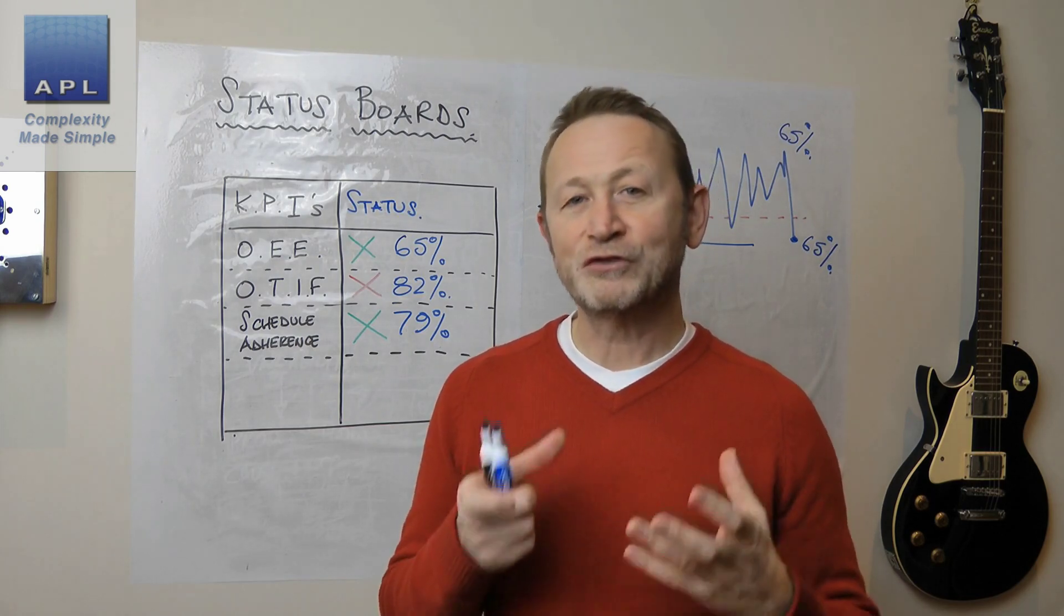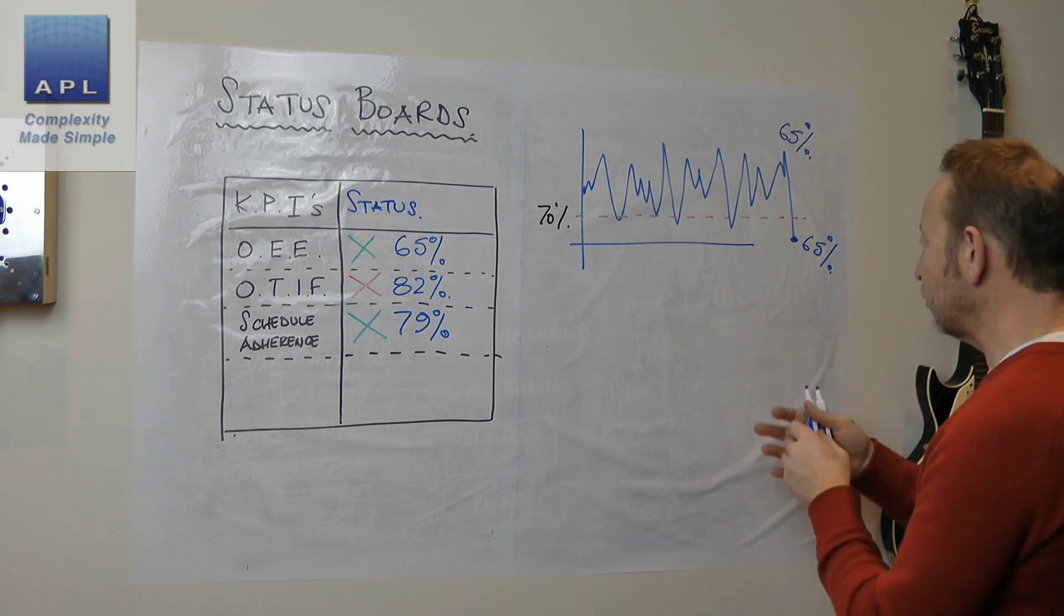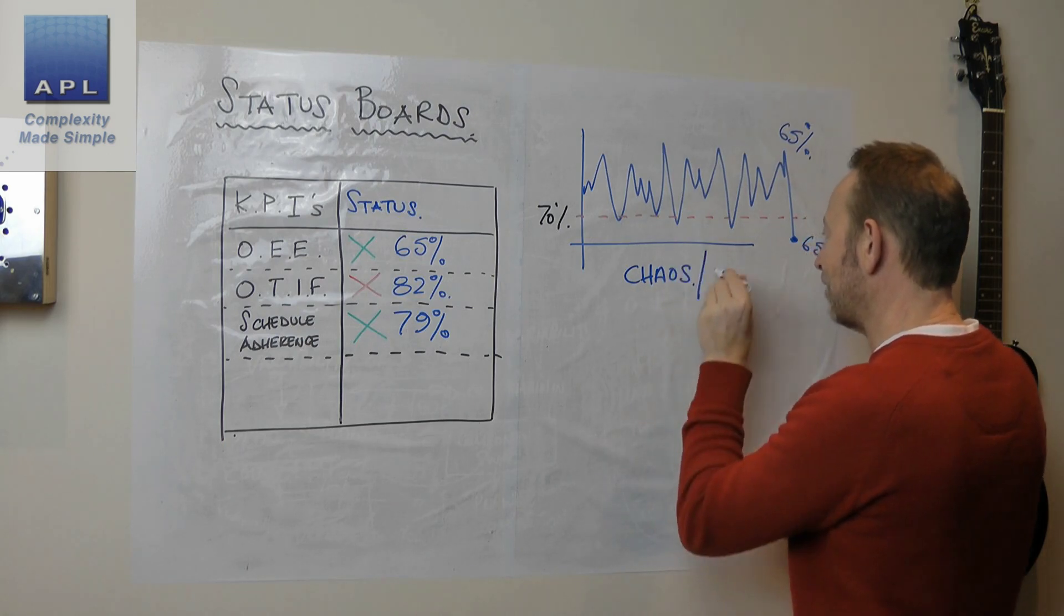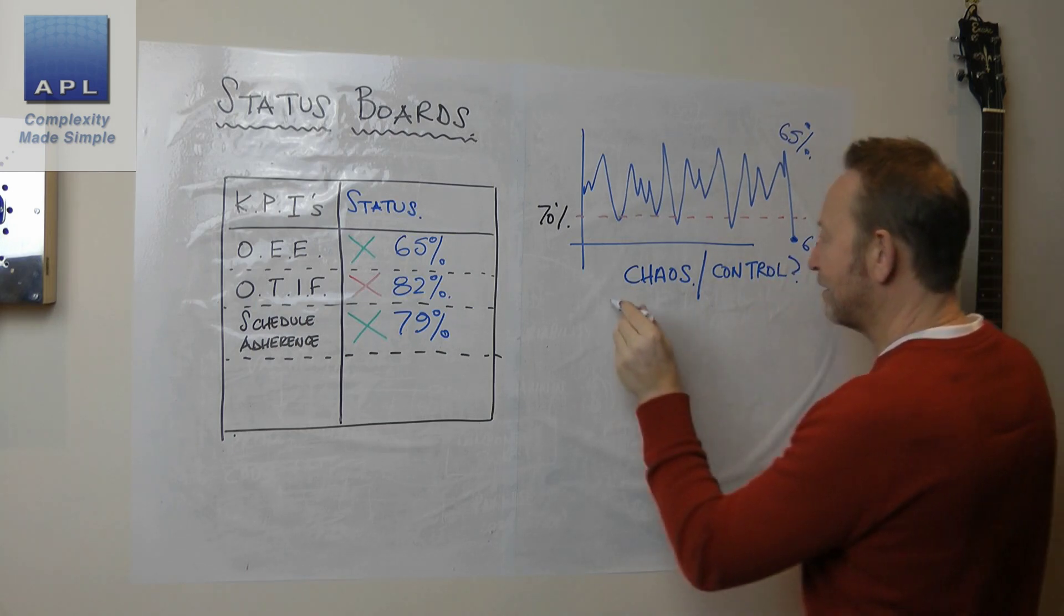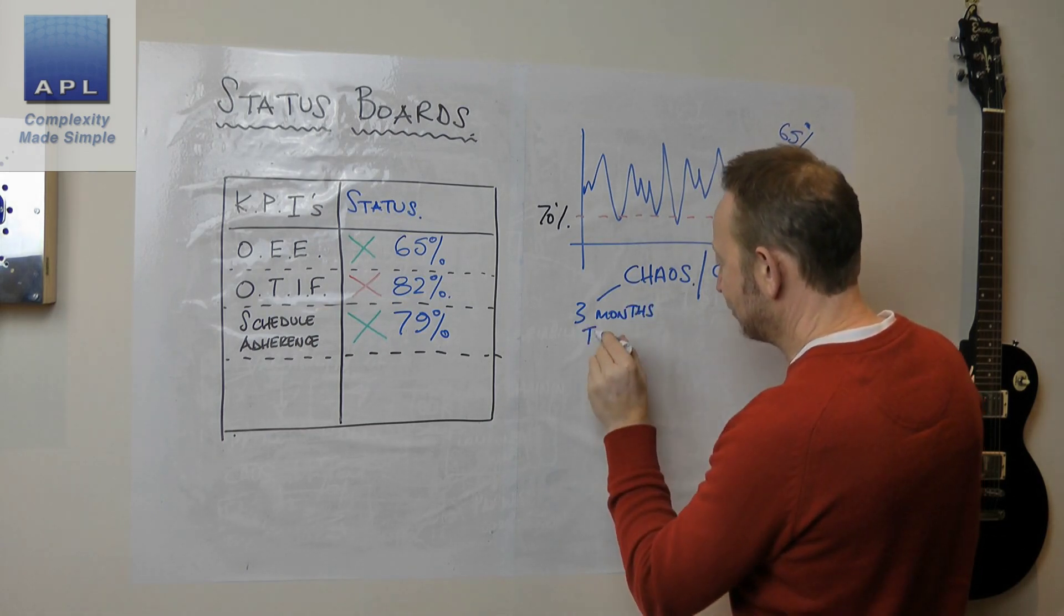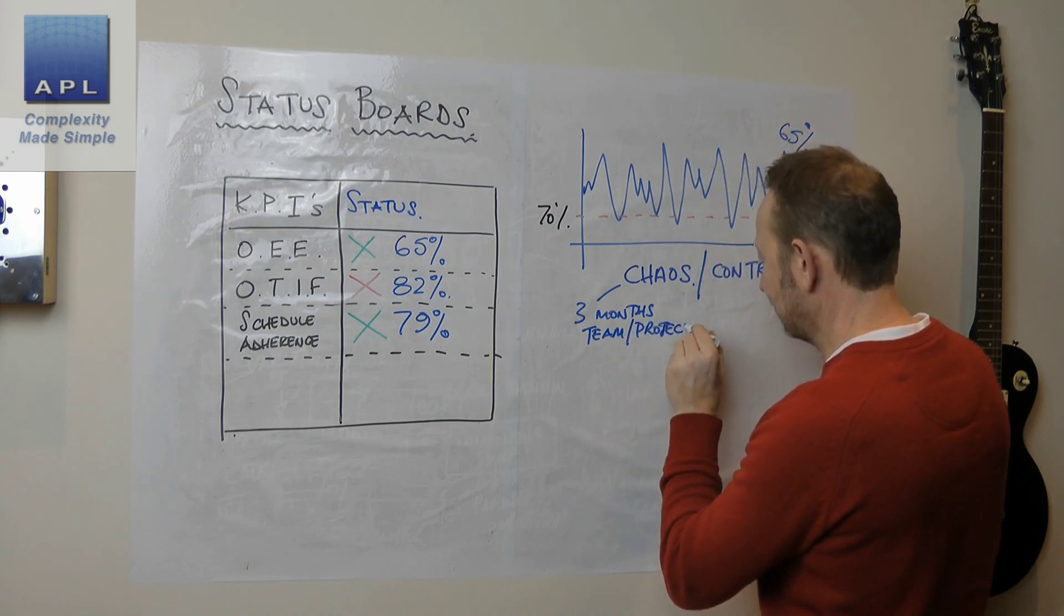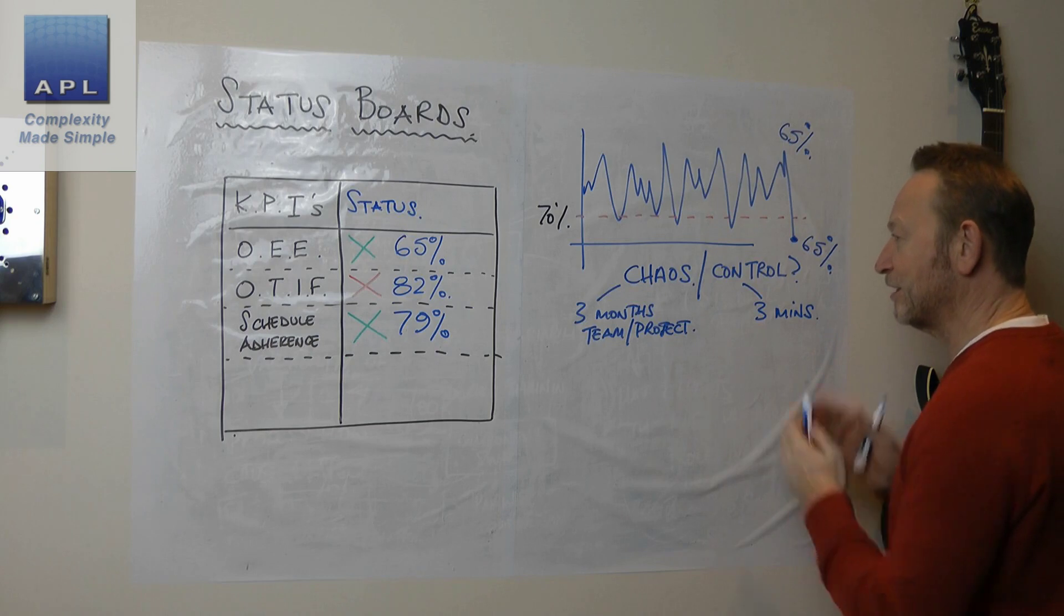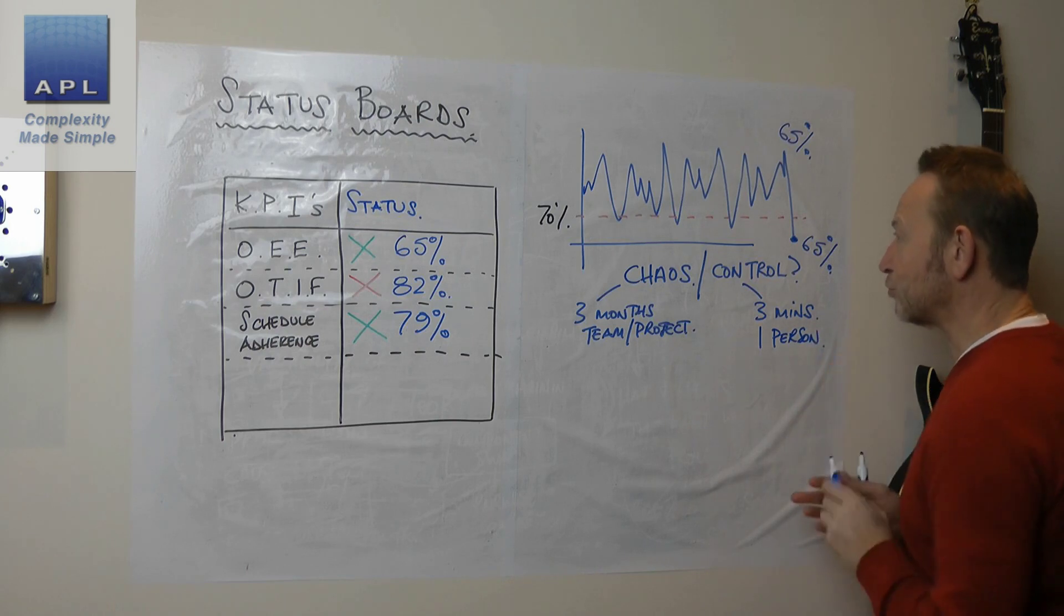But if the status goes red, there's an important question you've got to ask. And again, it needs the graph. When the status goes red, you have to ask the question, am I in chaos or control? Chaos will take three months to fix. It needs a team and a project. Control on the other hand could take three minutes to fix. It's very quick. Usually one person can sort that out.